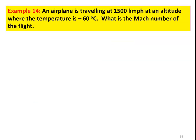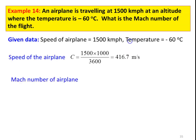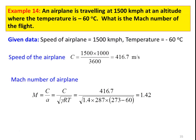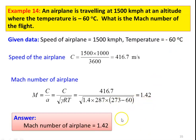Example 14: An airplane is traveling at 1500 km/h at an altitude where the temperature is −60°C. What is the Mach number of the airplane? Speed: C = 1500 × 1000/3600 = 416.7 m/s. Mach number: M = C/A = C/√(γRT) = 416.7/√(1.4 × 287 × 213) = 1.42. The Mach number of the airplane is approximately 1.42.